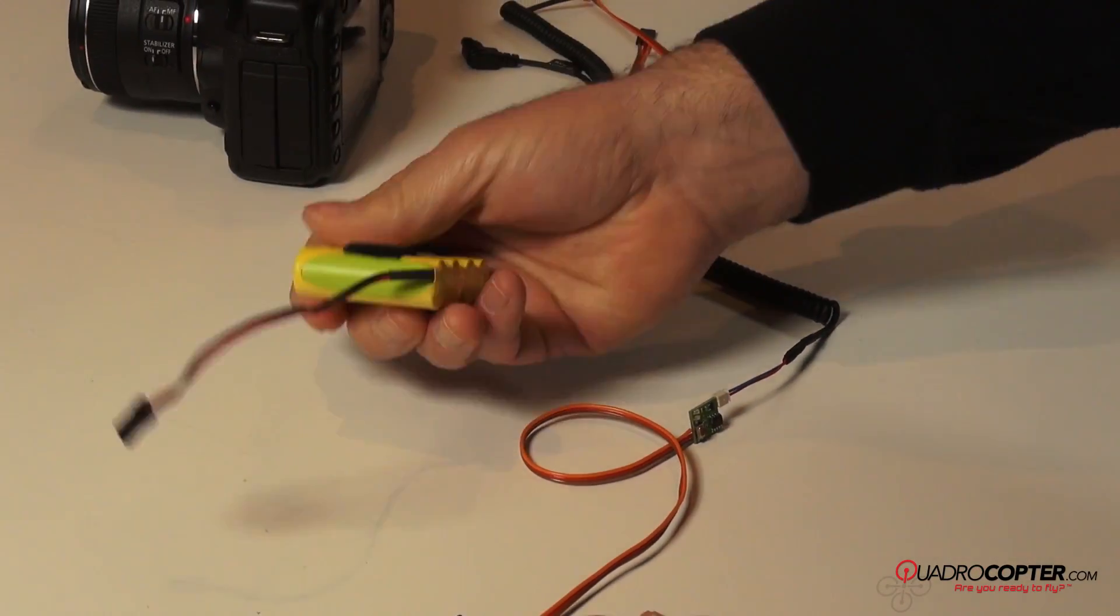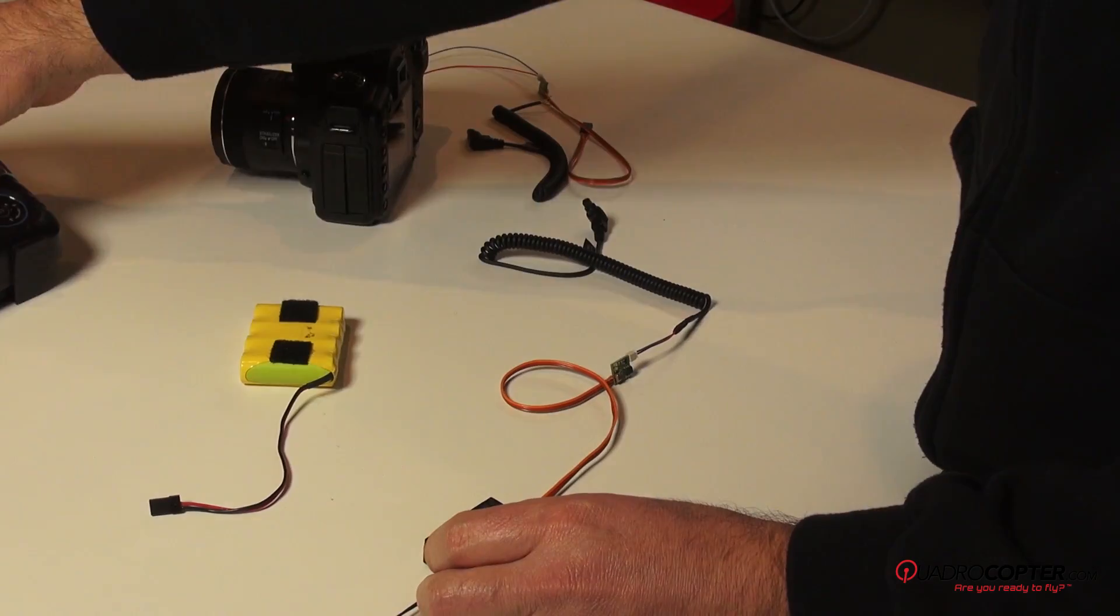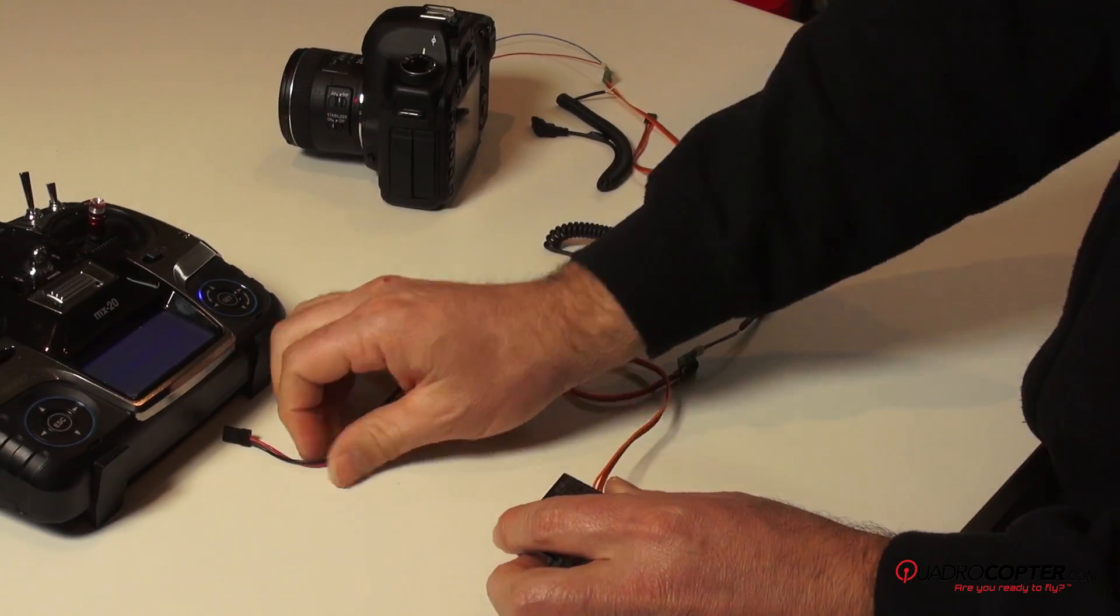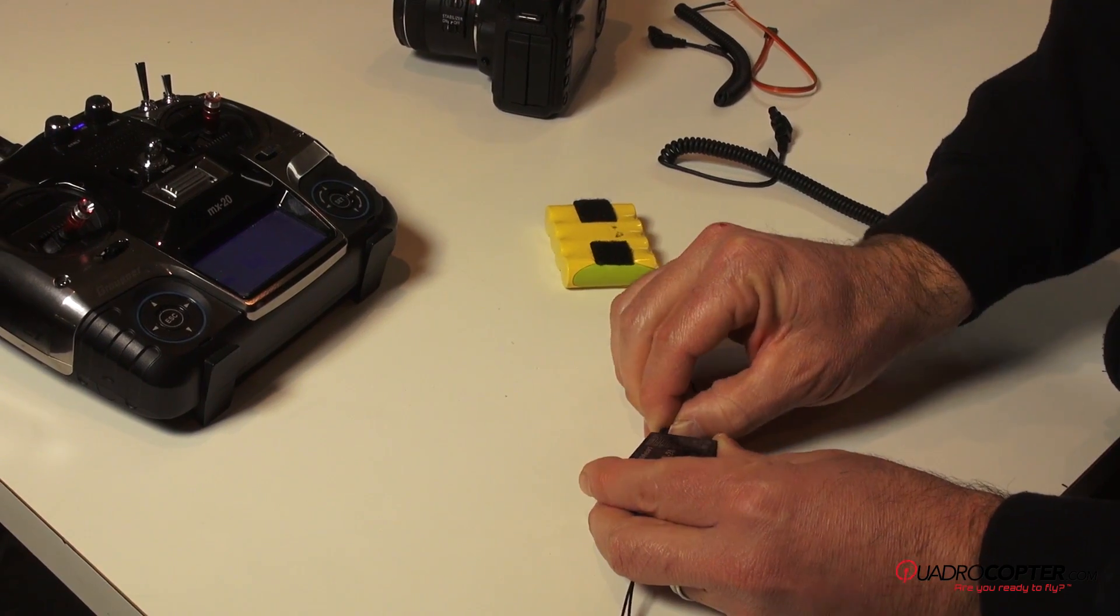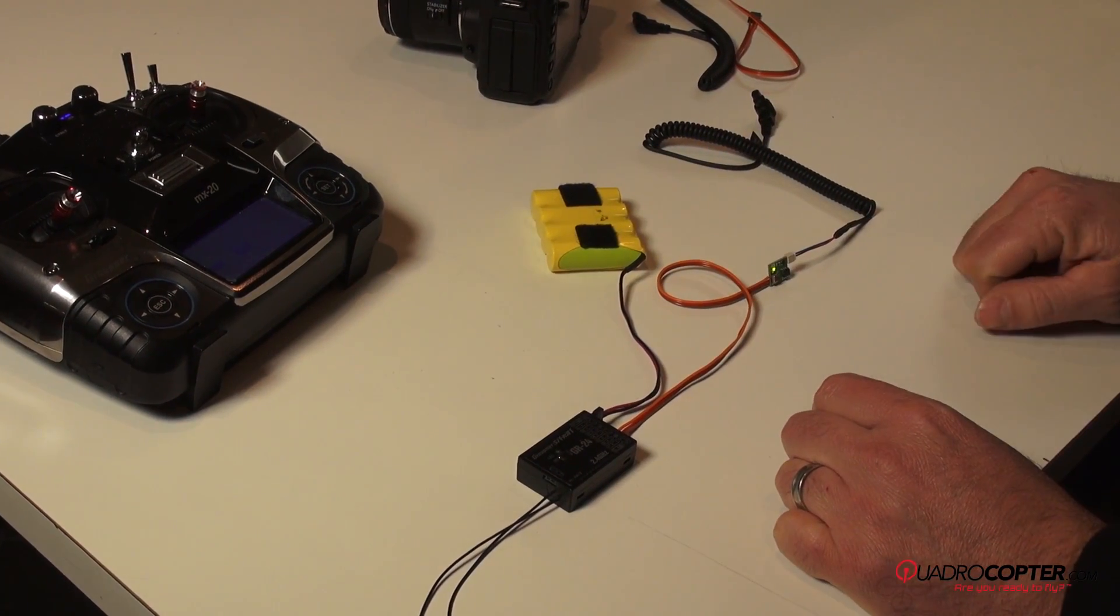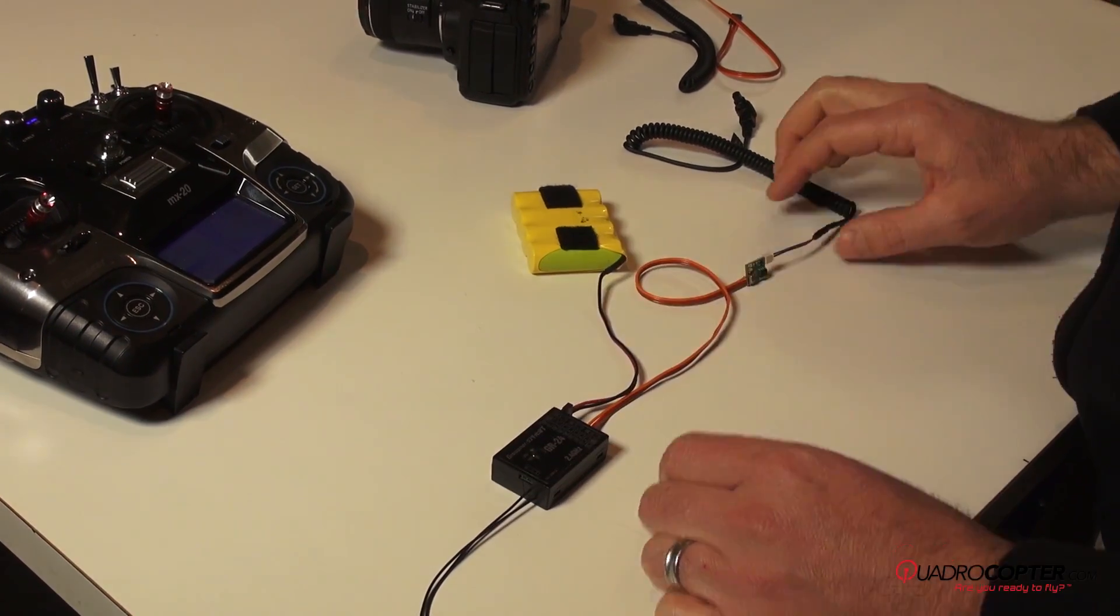To power this, I'm just going to be using a 4.8 volt receiver pack. So first we'll turn on our transmitter and plug in the receiver. This is all bound. This looks good.